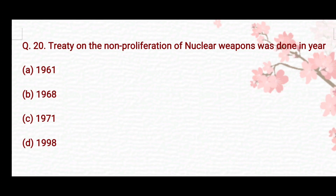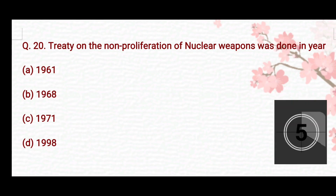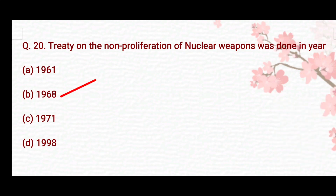The treaty on the non-proliferation of nuclear weapons was done in which year? Option A: 1961. Option B: 1968. Option C: 1971. Option D: 1998. The right answer is Option B — 1968.